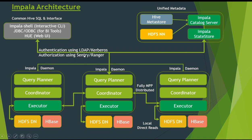For authentication we have LDAP and Kerberos for Impala, and for authorization we can use Sentry and Ranger. Sentry was used earlier in the Cloudera distribution, but now as Cloudera and Hortonworks have merged and are giving the new product CDP, in CDP we will be using Ranger and not Sentry anymore. On the Impala Daemon side the main components are the Coordinator and Executor, and on the metadata side we have the Impala Catalog Server and Impala StateStore. Those are the four main components of Impala, where the Coordinator is used for fault tolerance and load balancing of the executors.